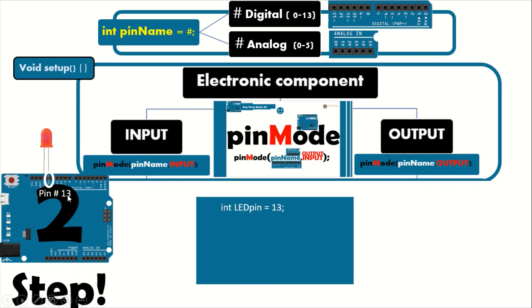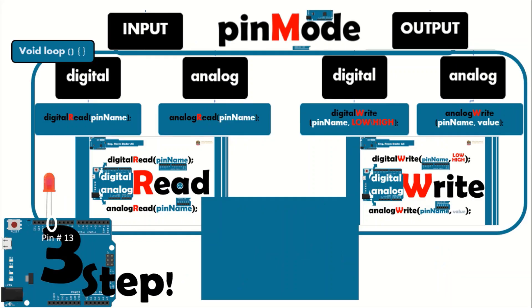In our example, the LED pin is connected to pin 13, so we initialized it as 'int LED_pin = 13'. We know there are two main functions: void setup and void loop. The second step is to identify the pin mode. Since this LED is considered output, we write: pinMode(LED_pin, OUTPUT).